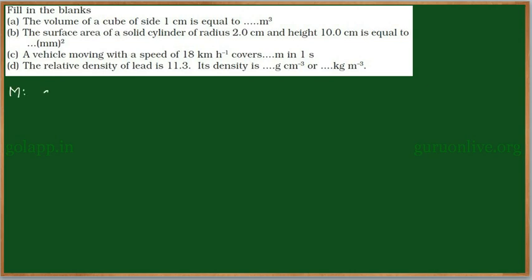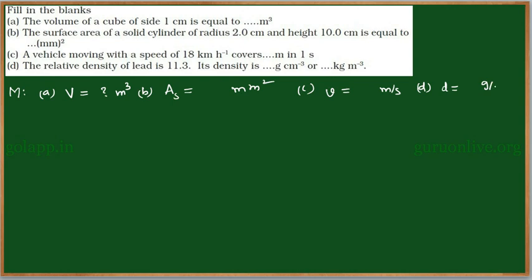So our motive is: for problem (a), find the volume of a cube where the side is given. For (b), find the surface area of a solid cylinder of radius two centimeters and height 10 centimeters in millimeter square. For (c), find how many meters a vehicle covers in one second at 18 km/h, i.e., convert speed to meter per second. For (d), find the density of lead in gram per centimeter cube as well as kg per meter cube.